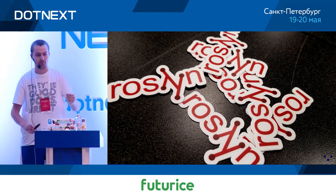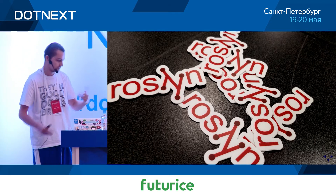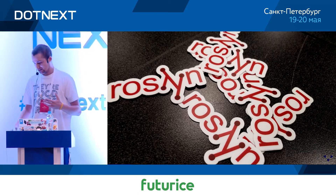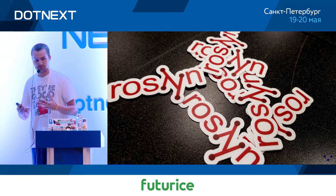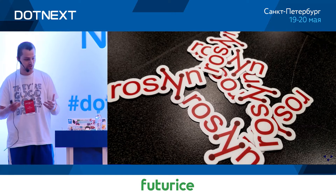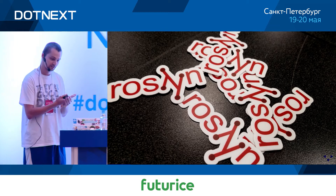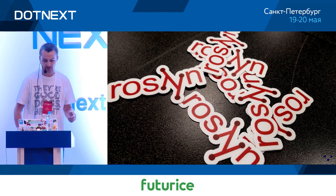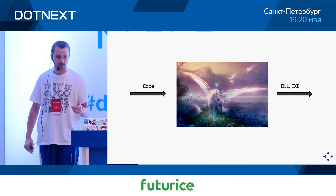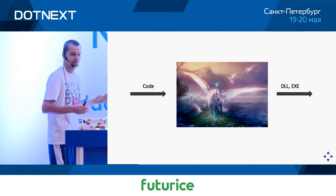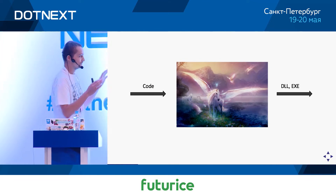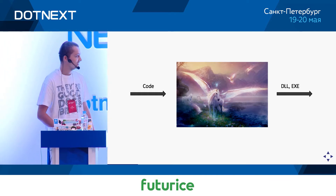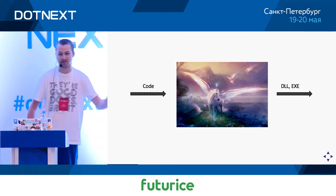For those of you who have not built a compiler — and also as a reminder for those who have — I've created a helpful diagram that explains how compilers work. So, you put some code in, magic happens, and bytecode comes out on the other side. The unicorn in the diagram represents C++.